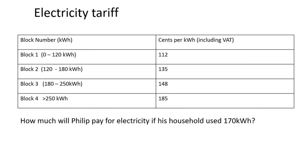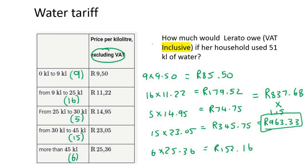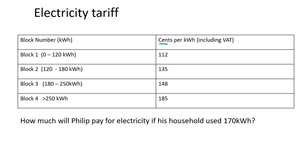Let's move on to electricity. Electricity works in pretty much exactly the same way, except we don't use kilolitres — we use kilowatt hours. You must always read the table carefully: sometimes prices include VAT, sometimes they don't, and they're given in cents per kilowatt hour rather than rand per kilolitre.